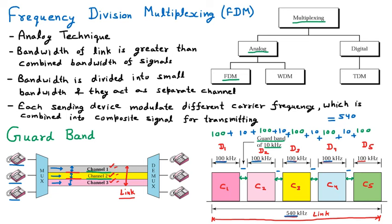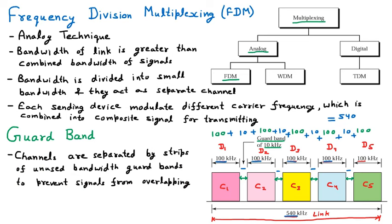Guard band means that when we have different channels, there is some gap between them so their signals do not merge together — this is called the guard band. So channels are separated by strips of unused bandwidth called guard bands to prevent signals from overlapping. If there are five devices sending data at 100 kilohertz, those five devices have five channels in a single link — through one cable — and these five channels are separated by gaps called guard bands.